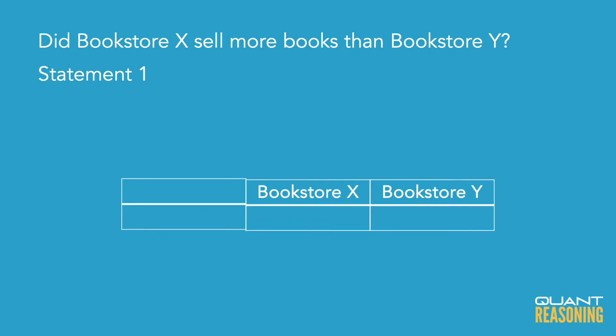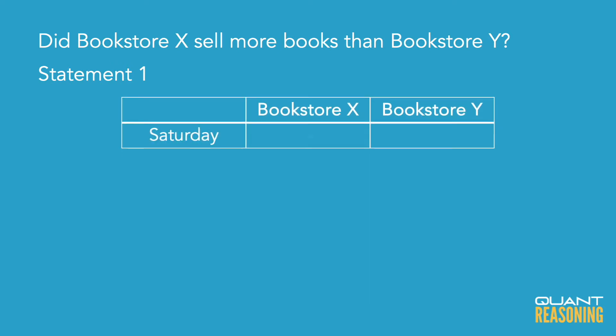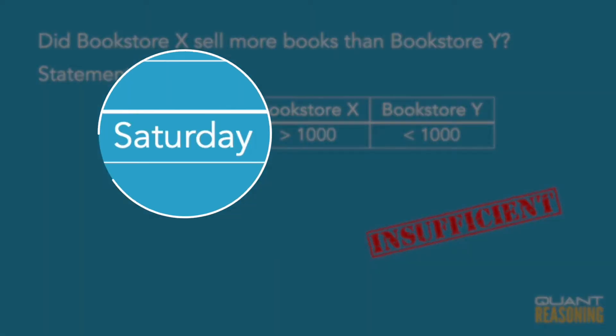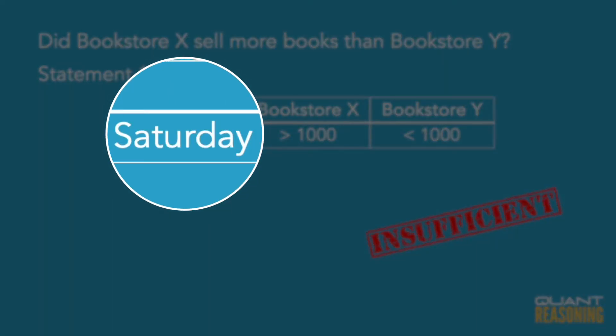My store sold more books than his store. And what I'm thinking when I look at statement one is: yes, I won on Saturday. My store sold more books — it was more than 1,000 versus fewer than 1,000. So my store was the winner on Saturday. But I wanted to know who was the winner for the entire week, and Saturday is just one day. So statement one is not sufficient on its own. We should eliminate answer choices A and D, and we're down to B, C, or E.